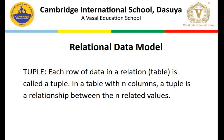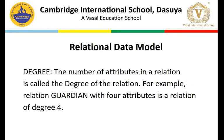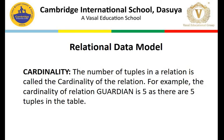Next in the relational data model, the second term is tuple. Tuple is a record. When all the columns are combined together they formulate a tuple, so each row of data in a relation is called a tuple. The next term is degree - the number of attributes in a relation is called the degree of the relation. The guardian relation has four attributes, so its degree is four. Cardinality is the number of tuples. In our example there were five tuples, so the cardinality of that relation is five.